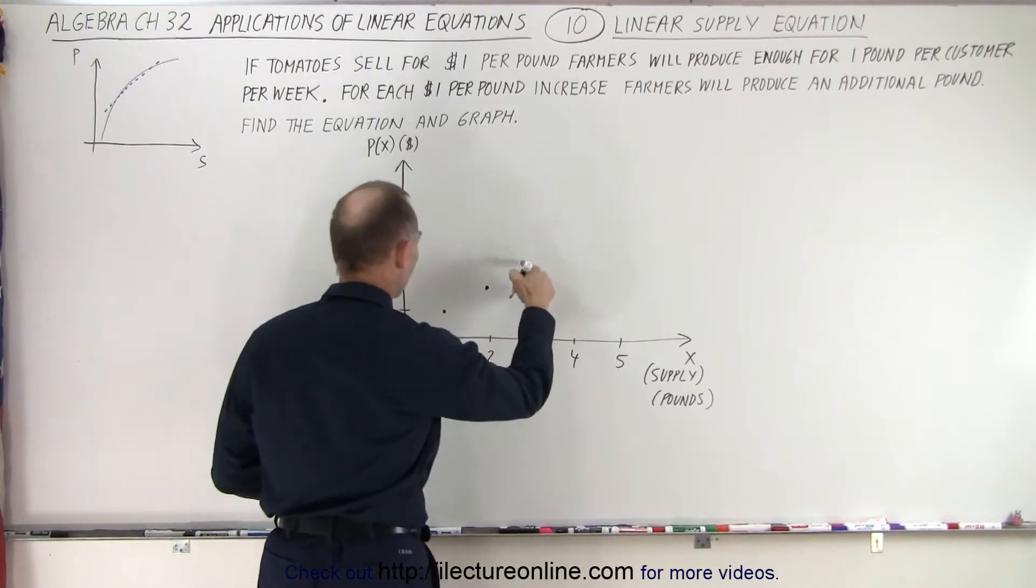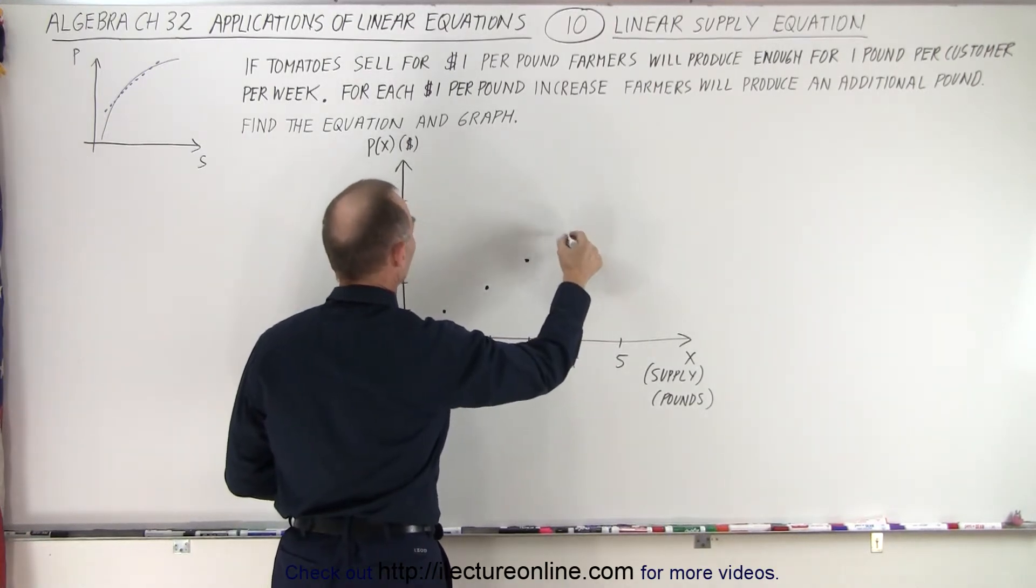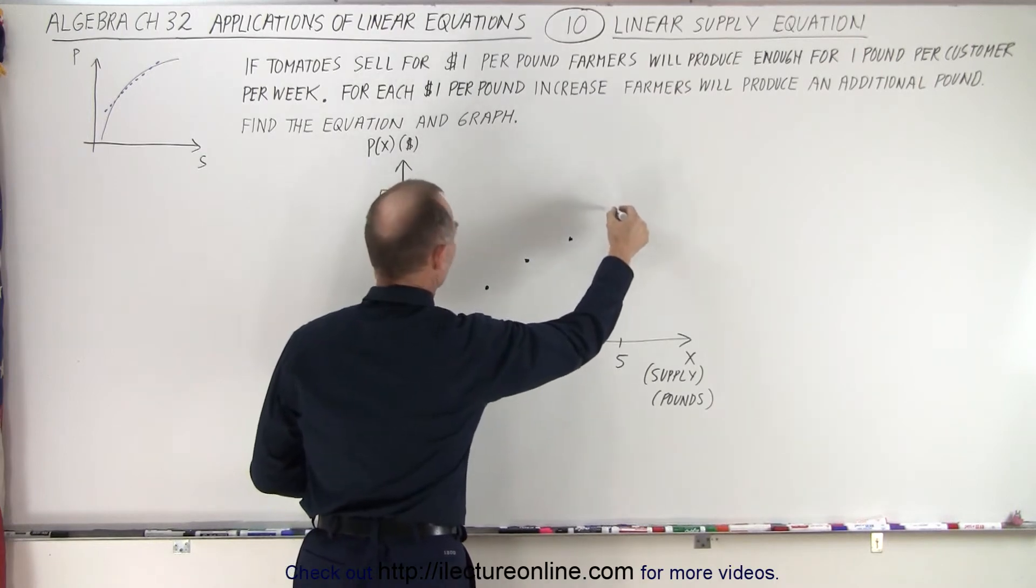So for $2, we'll supply two pounds. For $3, we'll supply three pounds. For $4, four pounds. For $5, five pounds and so forth.